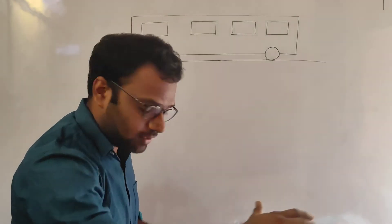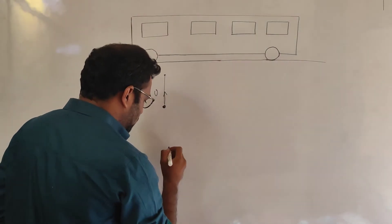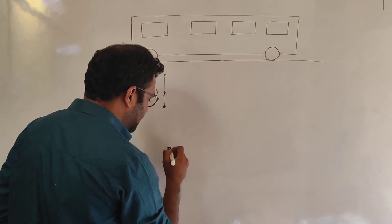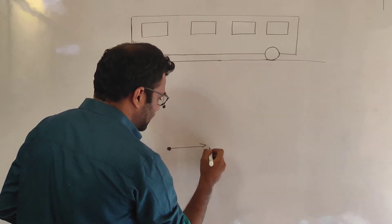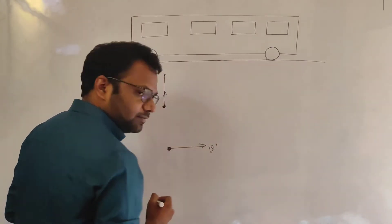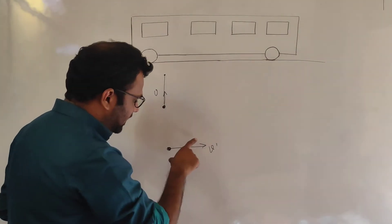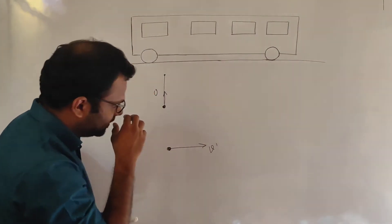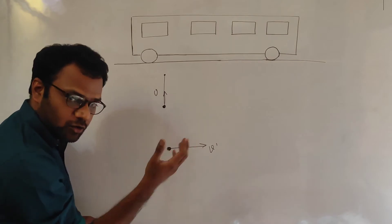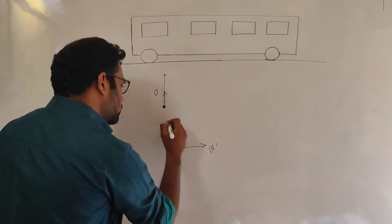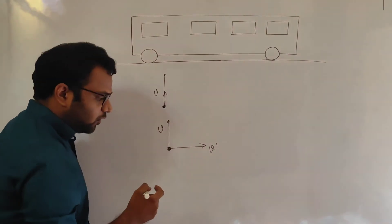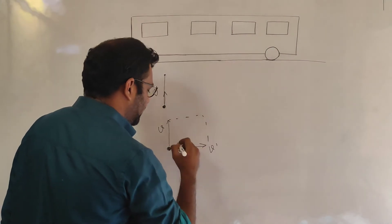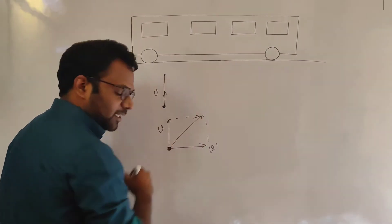Now suppose he does the same experiment when the train is in motion. When the train is in motion, the ball already has a velocity with the train. In addition to this, now he has given the ball an upward velocity, so the resultant velocity of the ball will be in this direction of this much magnitude.